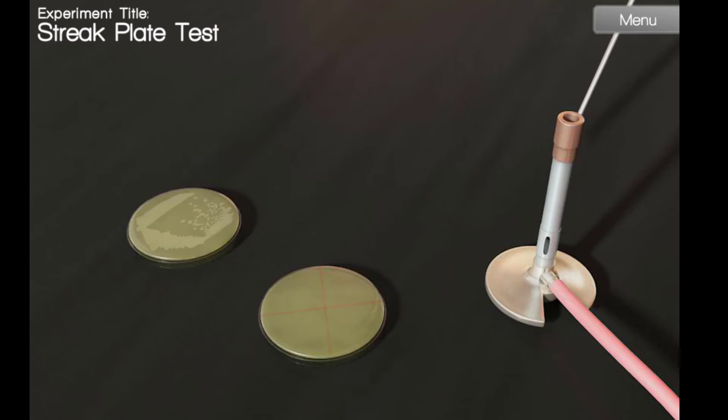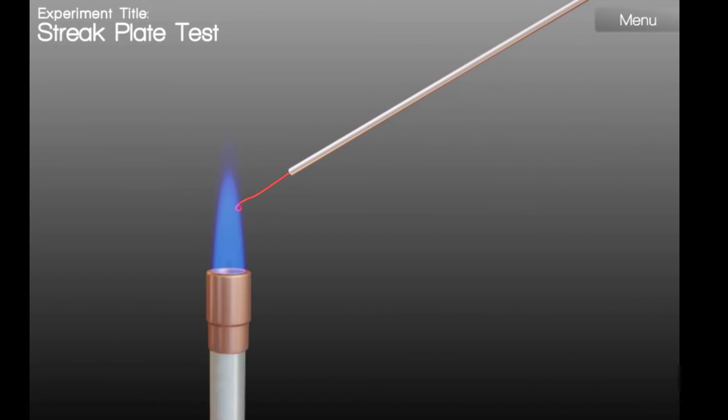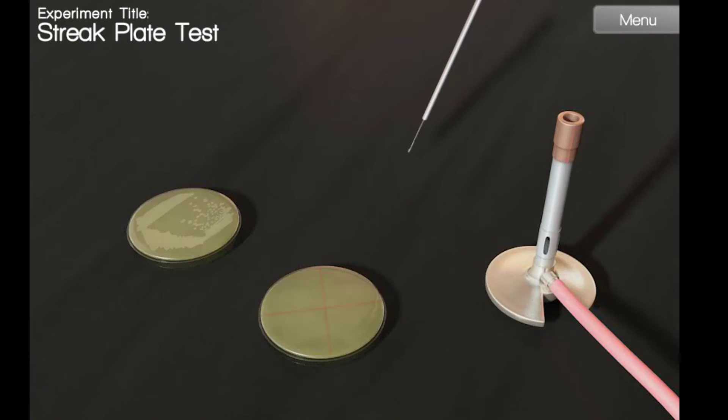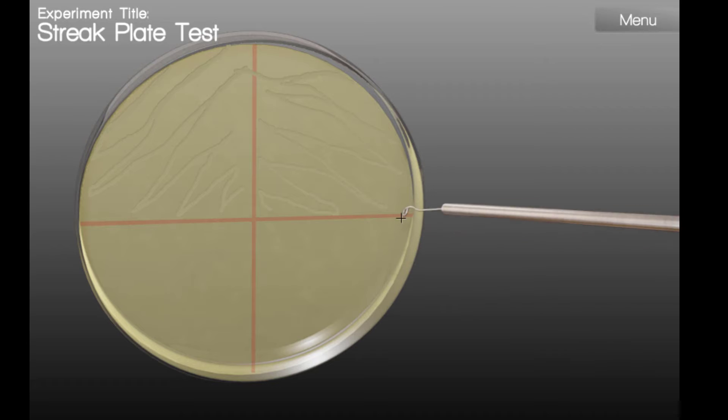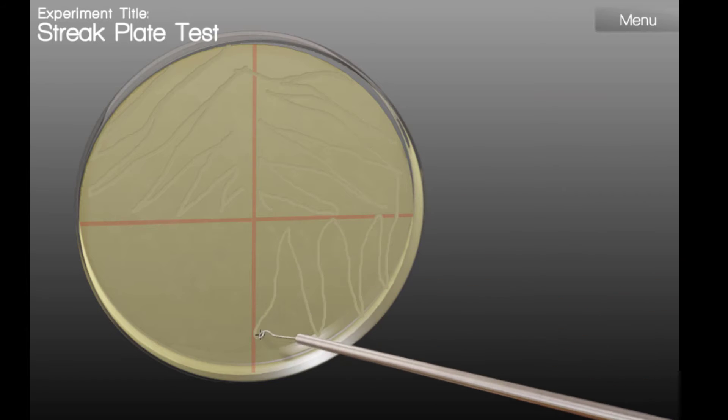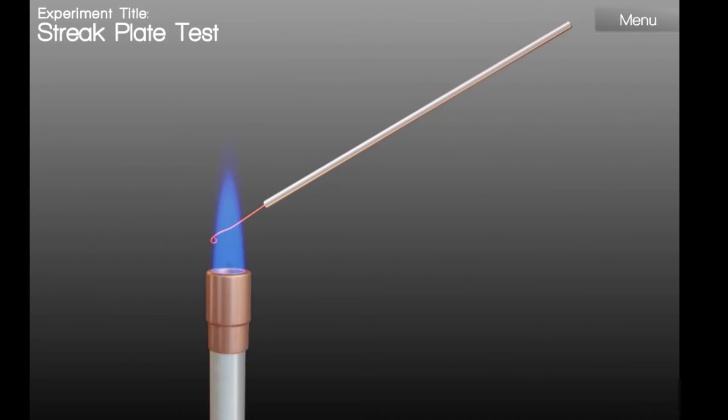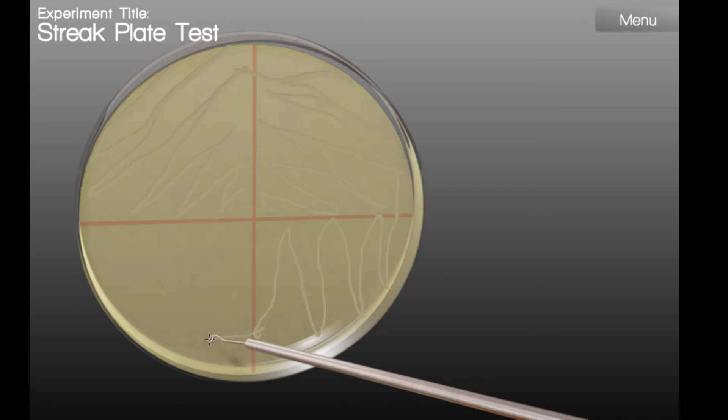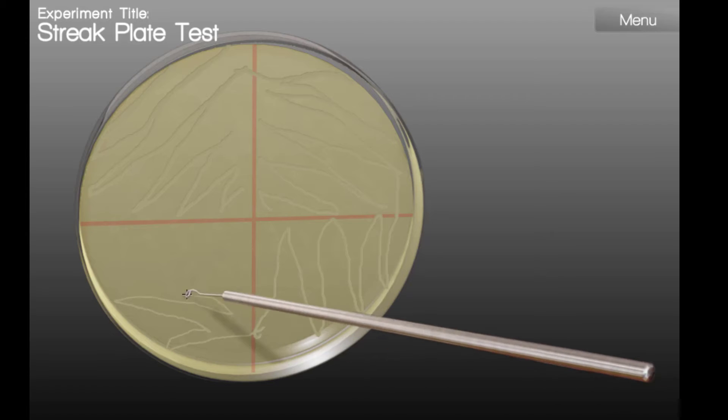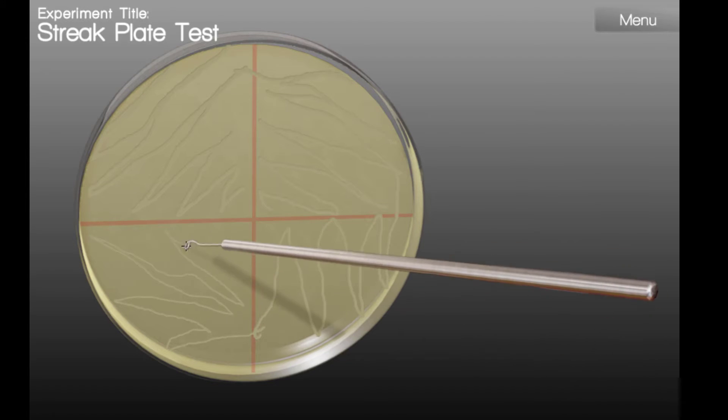I'm going to flame the loop once again, and repeat the procedure by dragging just a small amount of the inoculum into the third quadrant. I'm going to flame the loop once again, and streak our last quadrant, remembering to drag some of the previous quadrant into the new quadrant.